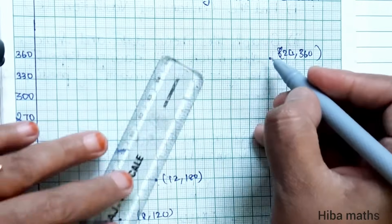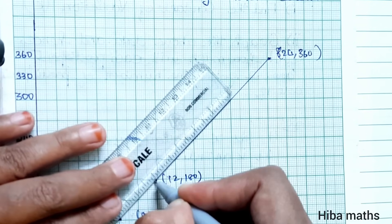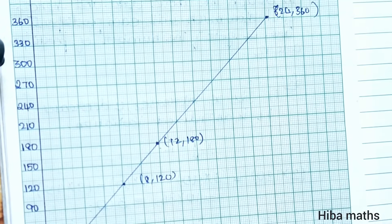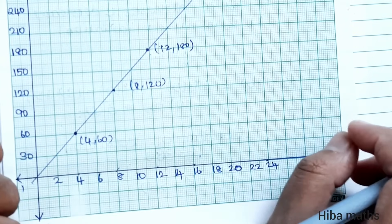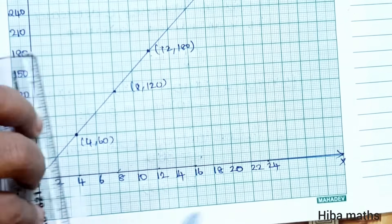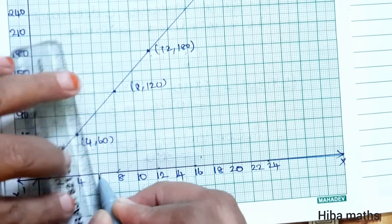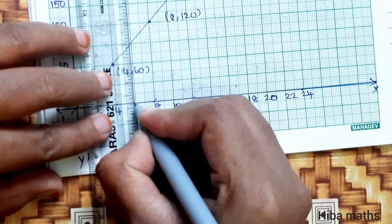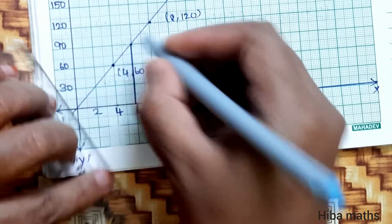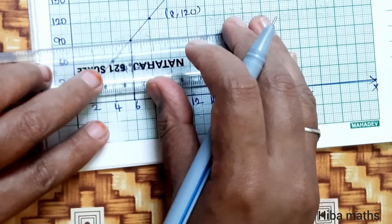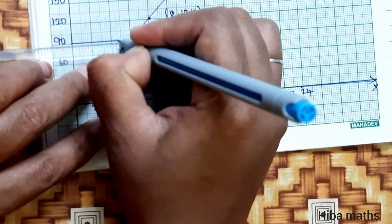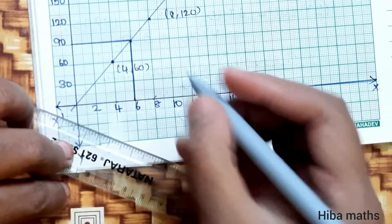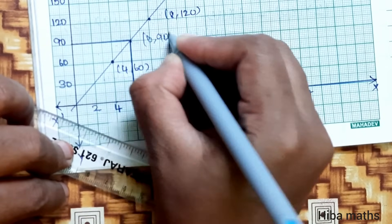Join all the points with a straight line using a scale. For the first question — find the amount when parking time is 6 hours — we drop a perpendicular line at x equals 6 on the graph. The line meets the y-axis at 90. So at 6 hours, the amount is 90 rupees.